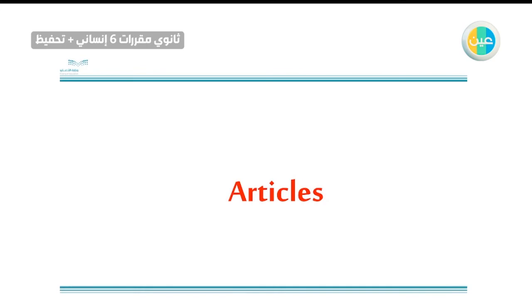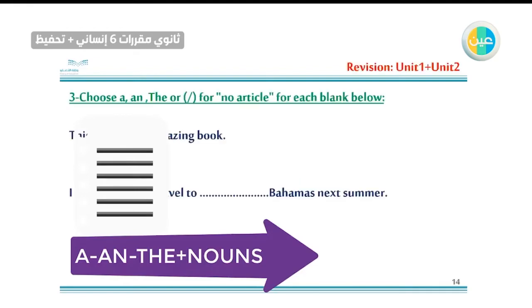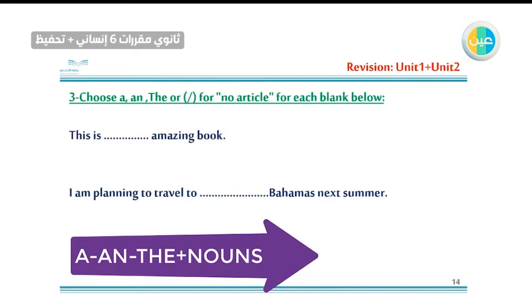Now we go to the articles. Articles means A, AN, or THE — they come before nouns, not verbs. They have rules and we need practice to become familiar with them. Choose A, AN, THE, or slash for no article — some nouns come without any article.